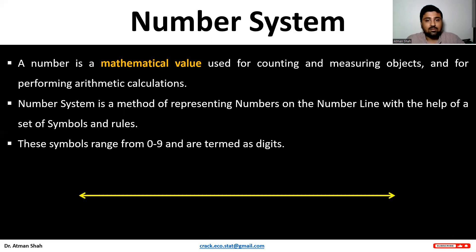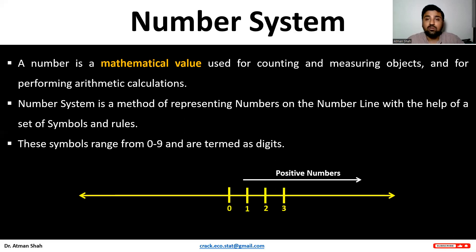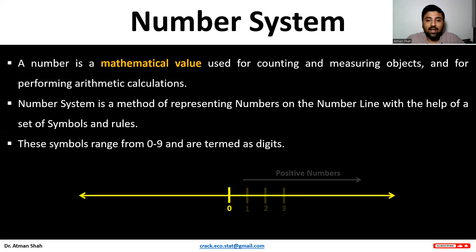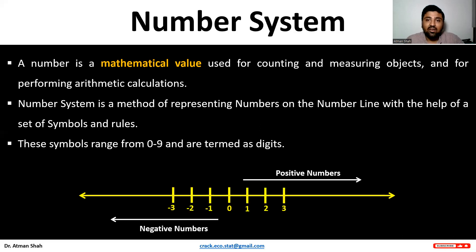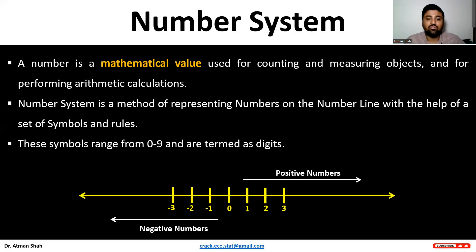See this number line? We have 0. On the right side, we have positive numbers: 1, 2, 3 up to infinity. And on the left side, we have negative numbers: minus 1, minus 2, minus 3 up to minus infinity.